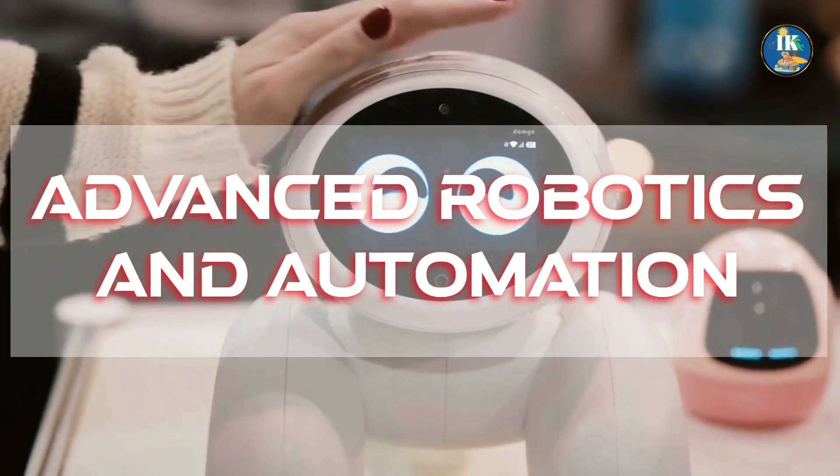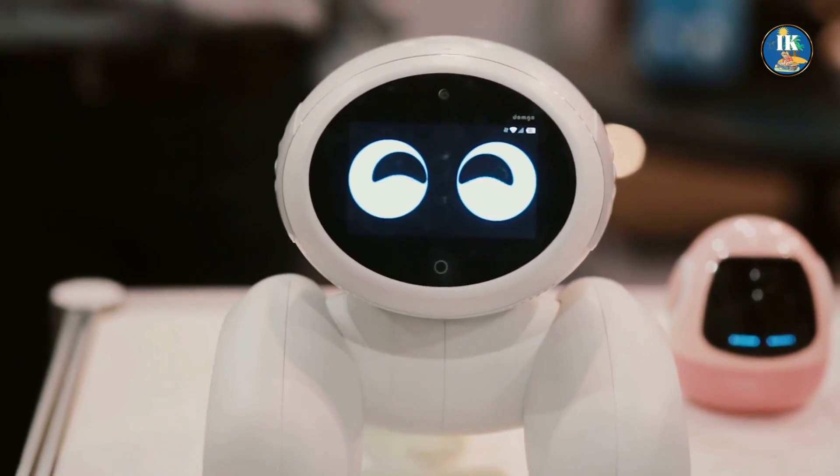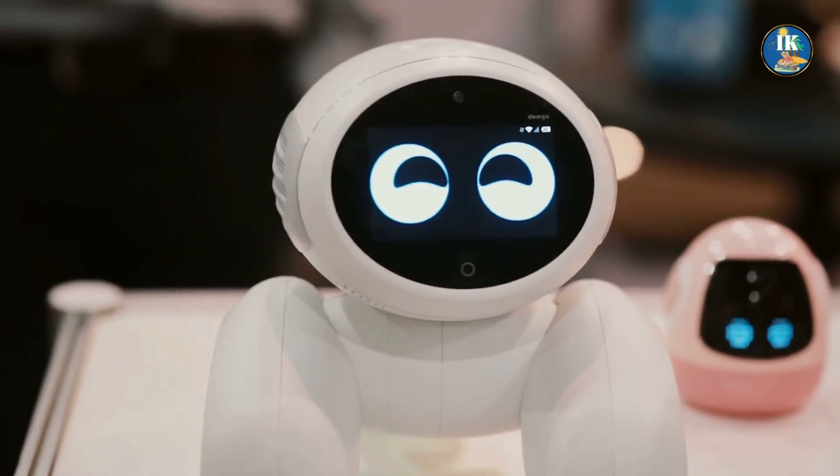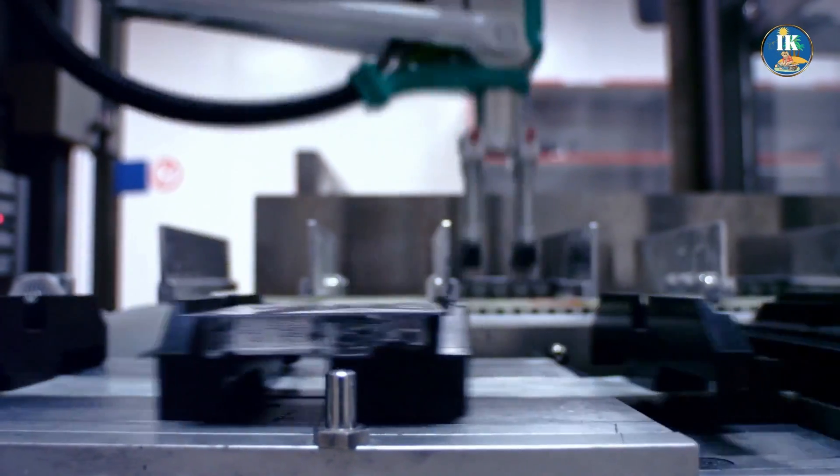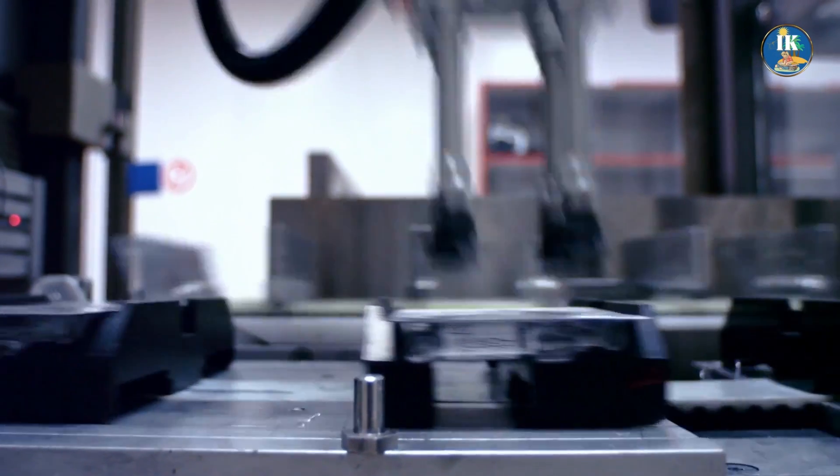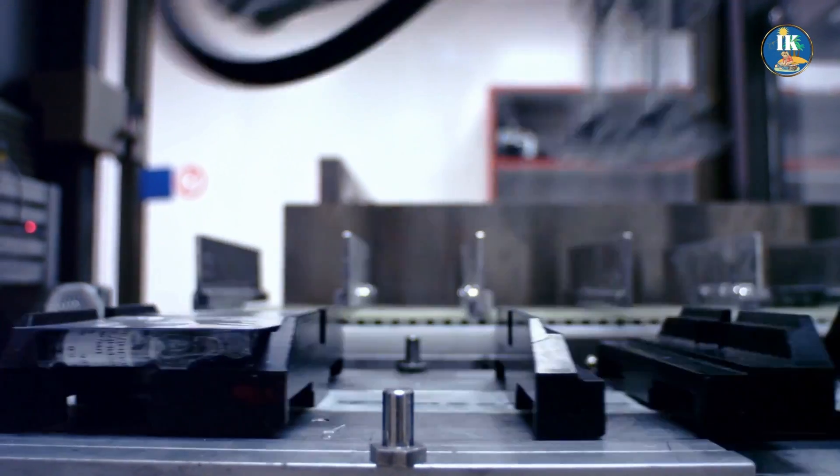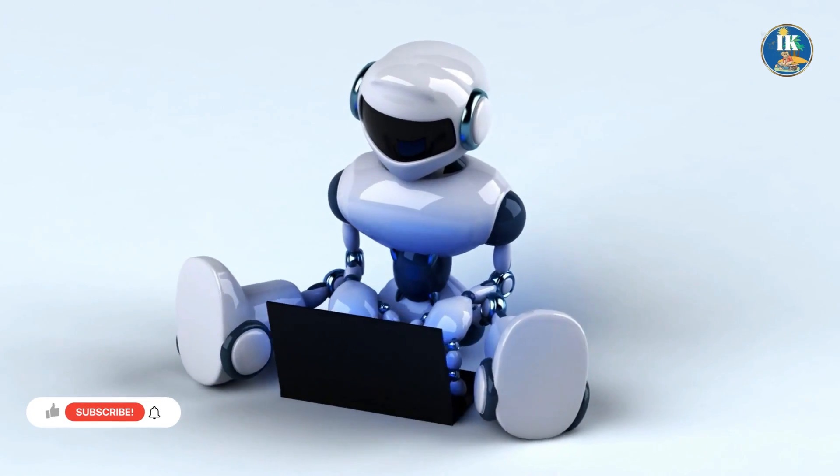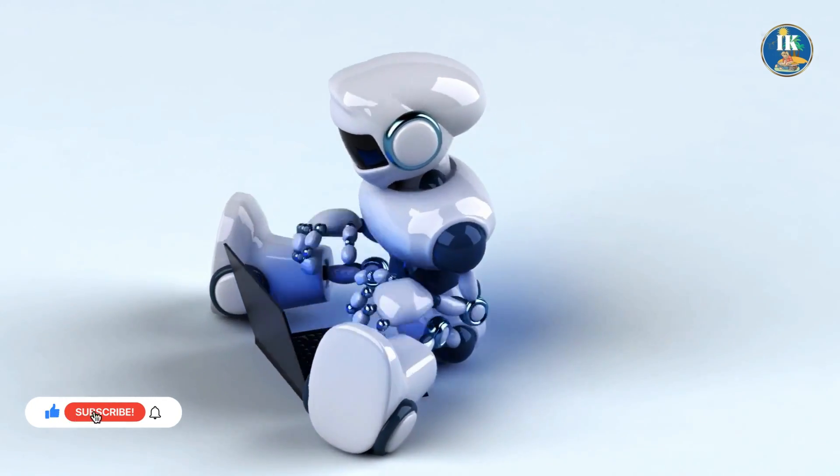Advanced robotics and automation are cutting-edge technologies that are revolutionizing the way we live and work. At their core, these fields involve the use of intelligent machines and computer systems to perform complex tasks and make decisions without human intervention.